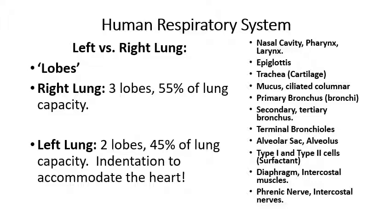Be aware that the two lungs are not identical. Whenever an organ is naturally divided into pieces, we call those pieces lobes. If you take all the air that gets into the lungs as 100%, the right lung is actually larger than the left lung. It is composed of three lobes and contains 55% of the lung capacity. The left lung is a little bit smaller, composed of two lobes that contain 45% of the air you breathe.